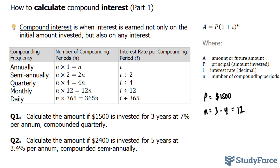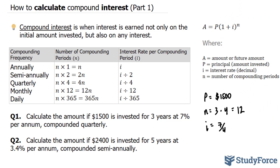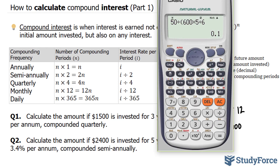Our interest rate, represented by the letter i, is calculated like this. Since we have compounded quarterly, we take our interest of 7% and divide it by 4, then divide by 100 to convert from percentage to decimal. So 7 divided by 4 divided by 100 gives us 0.0175.